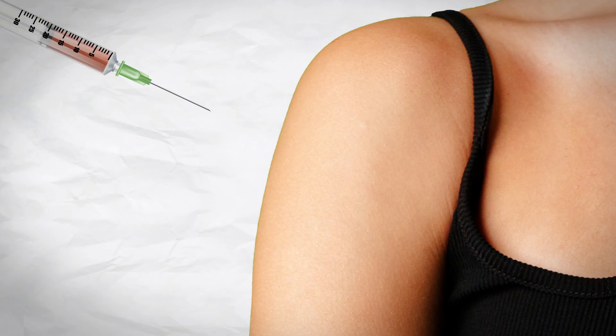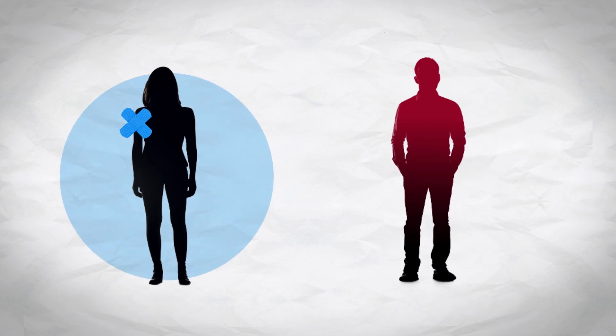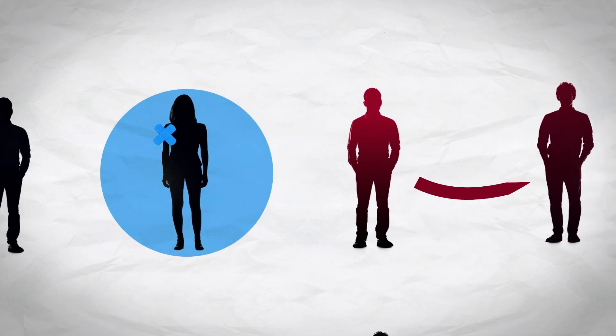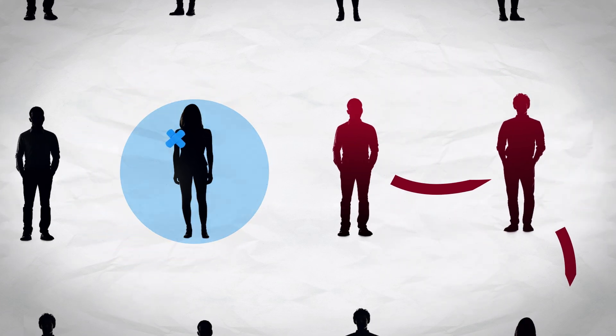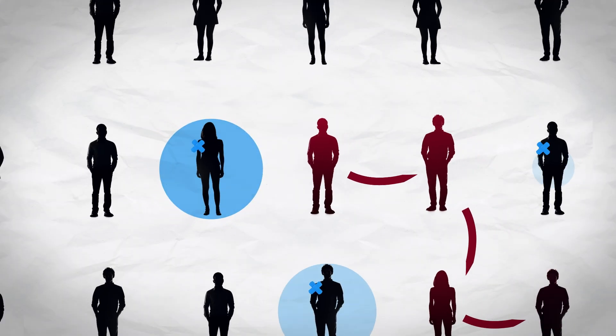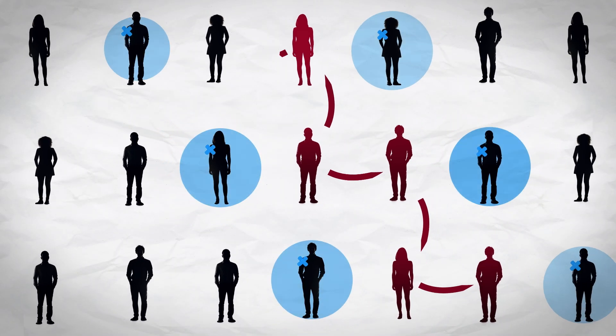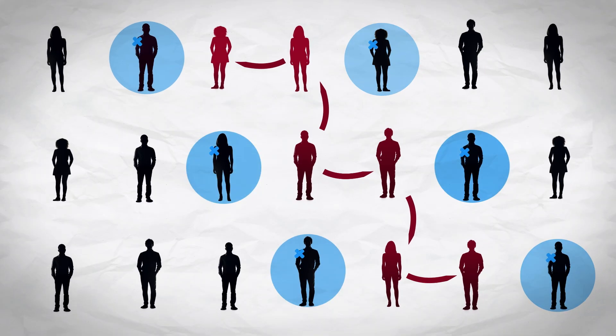Can you guess which type of medicine creates a significant positive externality? It's the simple flu shot. When you get a flu shot, not only are you less likely to get the flu, but those around you are less likely to get the flu as well, whether or not they've had the shot. That's because the flu is highly contagious, and your flu shot limits the spread of the virus.